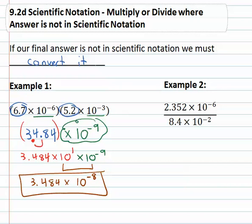Following much the same pattern, we will divide the numbers, probably using a calculator again, 2.352 divided by 8.4 is 0.28. Then we'll use our exponent properties on the tens, times ten to the,